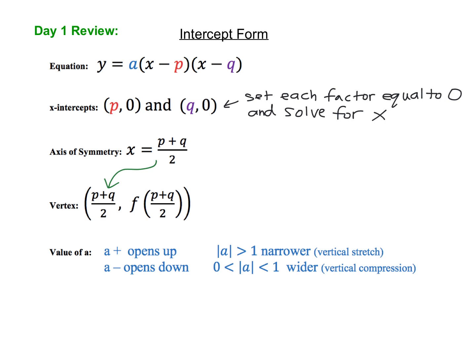If we look at the absolute value of a, that tells us whether the graph gets wider or narrower. If the absolute value of a is greater than 1, the graph gets narrow, and we call that a vertical stretch. If the absolute value of a is between 0 and 1, like 1 over 4 or 1 half, then the graph is going to get wider, and we call that a vertical compression.